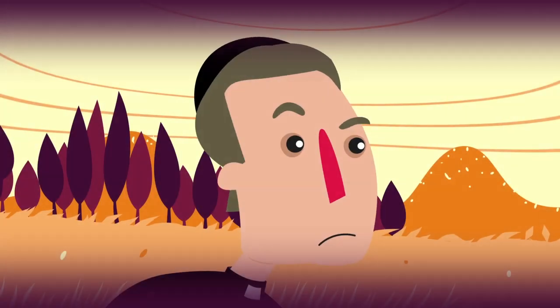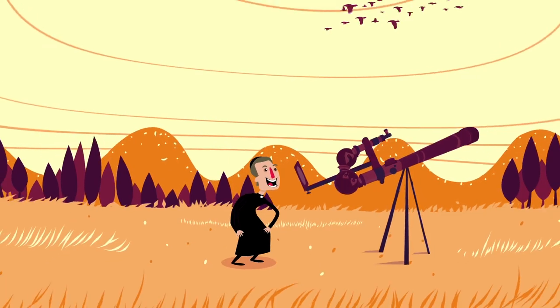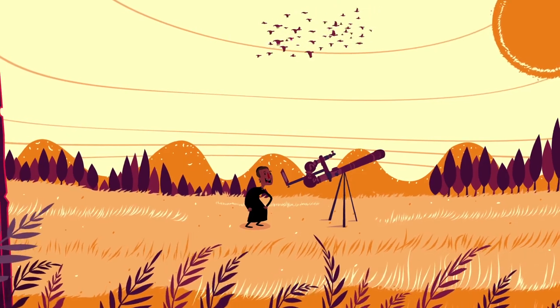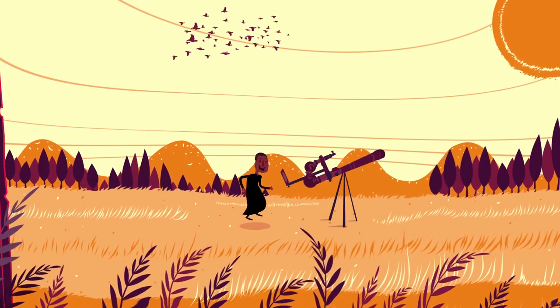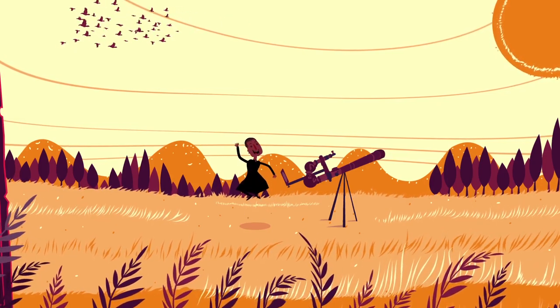El padre Secchi descubrió estas estructuras en 1877 y las llamó pratería ardente o pradera ardiente. Hoy las conocemos como espículas, que significa pequeñas espigas en latín.